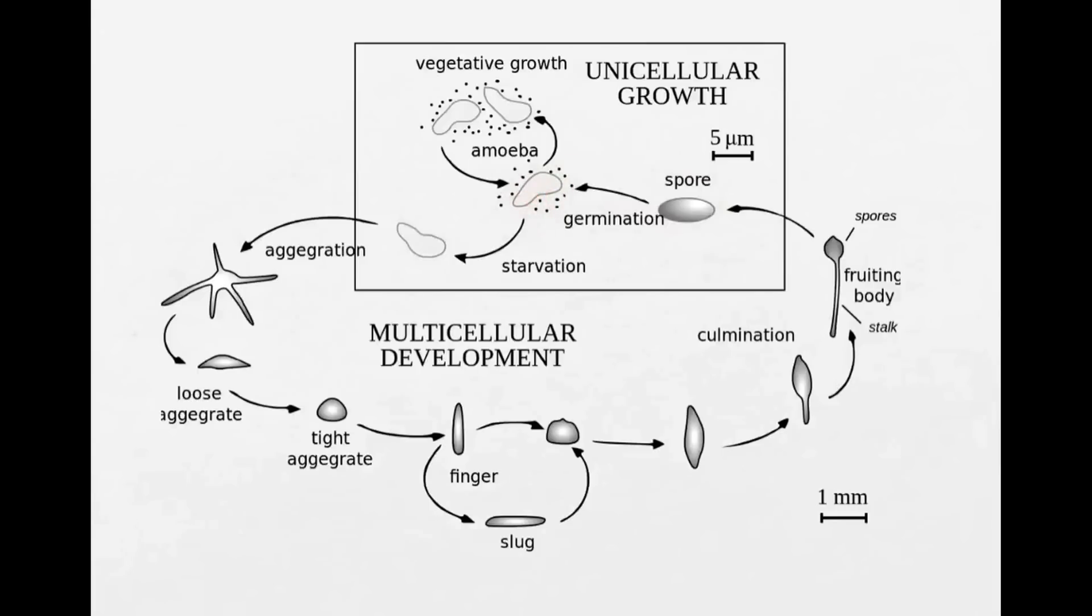Now this amoeba is a single cell that wanders around, it can move, and it eats bacteria. These little dots here indicate the bacteria. When the amoeba grows up, it can divide into two amoeba, and sooner or later, depending on when the food is really good, you get lots and lots of amoeba. But they are all independent organisms. They wander around and eat whatever they find.